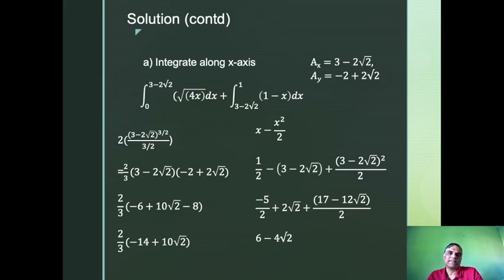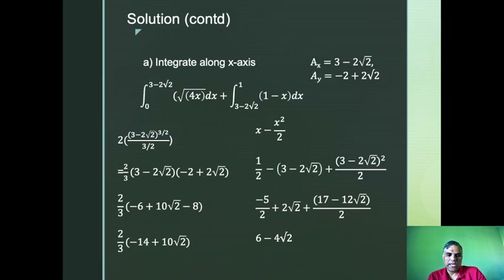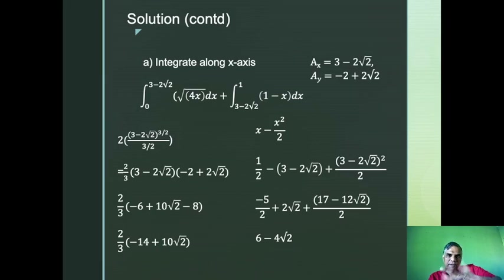Let's integrate along the x-axis. From 0 to Ax we integrate √(4x) = 2√x, whose antiderivative is 2 · (x^(3/2))/(3/2) = (4/3)x^(3/2). To evaluate at x = Ax = 3 − 2√2, note that x^(1/2) = y/2 (since y² = 4x means √x = y/2). This avoids taking the square root of 3 − 2√2 directly. The 2 in the denominator cancels, giving a coefficient of 2/3 rather than 4/3.